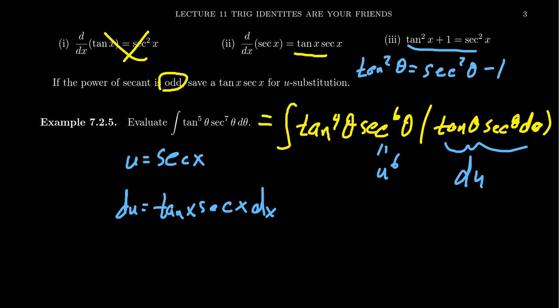Making that substitution, tangent to the fourth is going to become, well, tangent to the fourth is just tangent squared squared. So we're going to get secant squared theta minus one. That's tangent squared. And then if we square that, we'll get tangent to the fourth. Recognizing, of course, every secant becomes a u. This will become u squared right there.